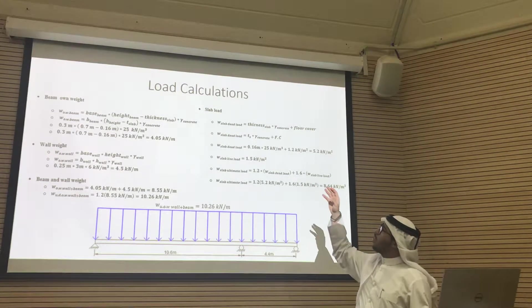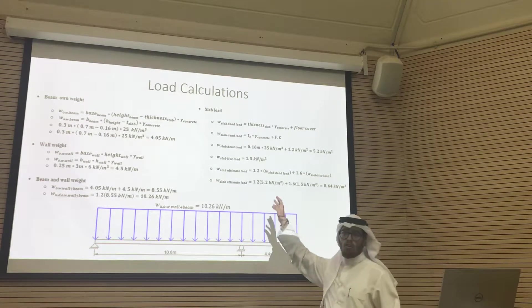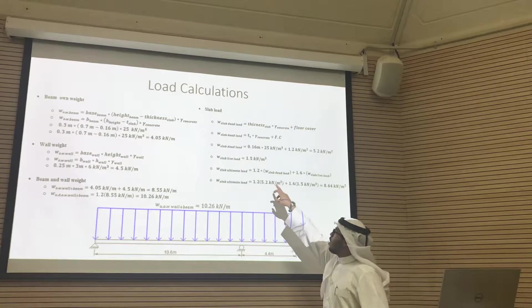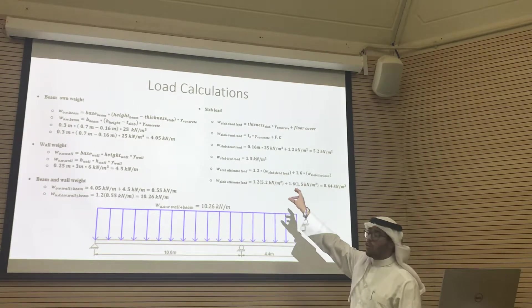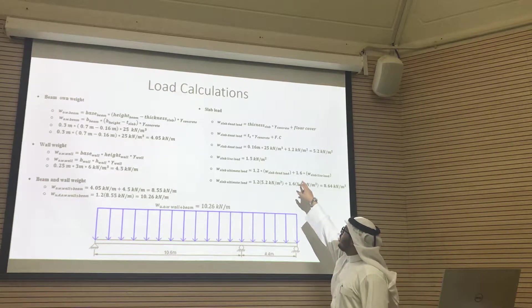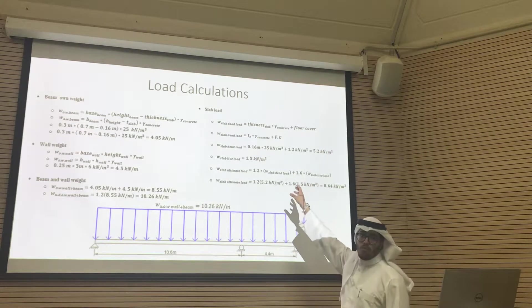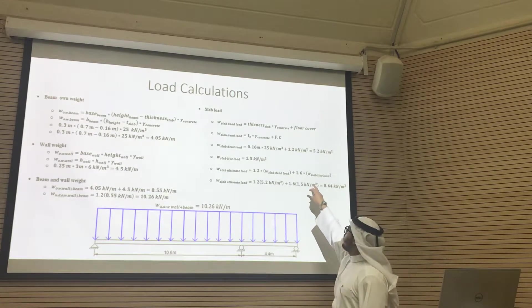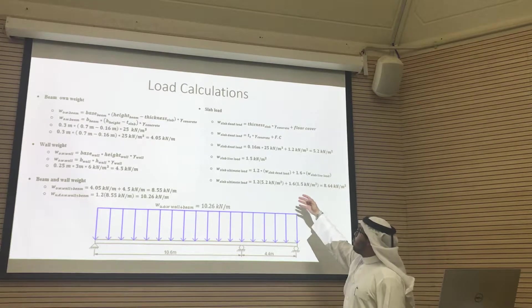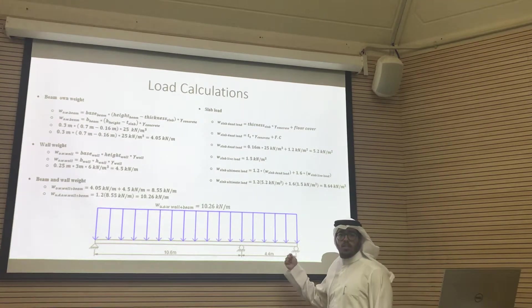First of all, we should find the dead load, then we should find the live load. After that, we should find the ultimate load which is given by this equation: 1.2, which is a factor multiplied by the slab dead load, adding to 1.6, which is the factor value, multiplied by the live load. Finally, we will come up with the slab ultimate load.